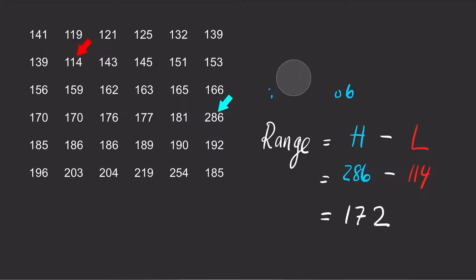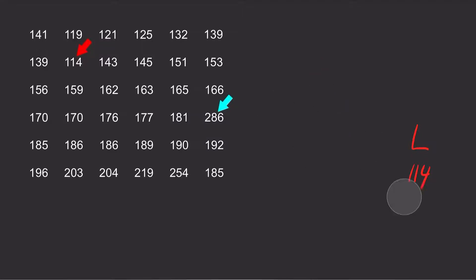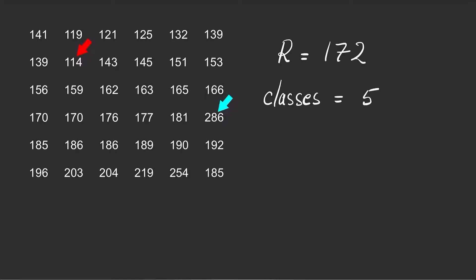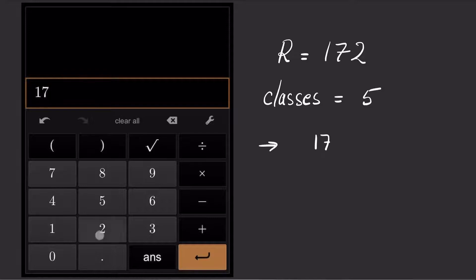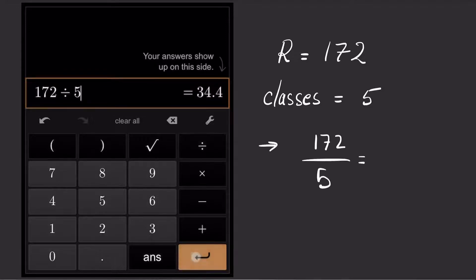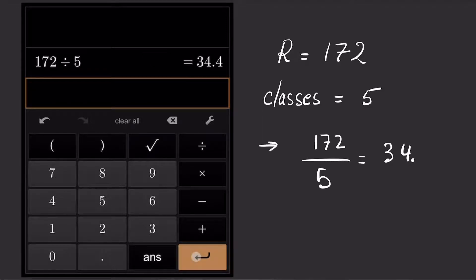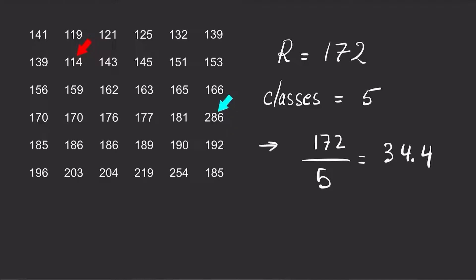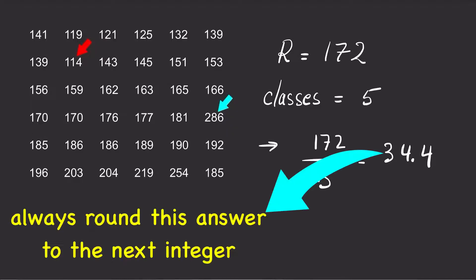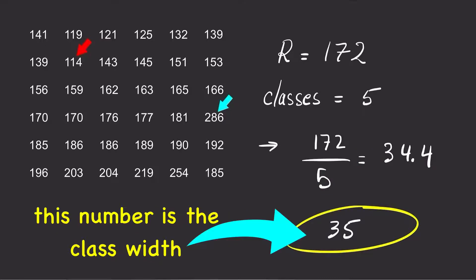Now take the range and divide it by the number of classes that we want. In this case, the range is 172 and we want five classes. So 172 divided by 5 is 34.4. Always round this answer to the next integer, so the answer is 35. We will use this number as the class width.